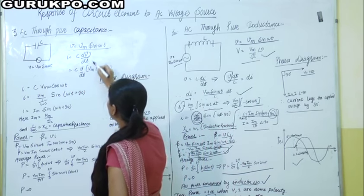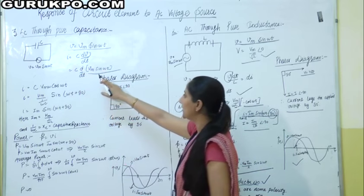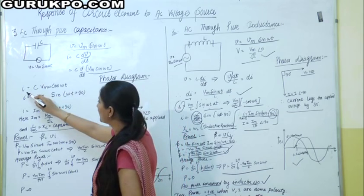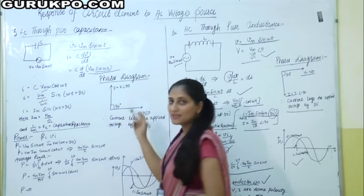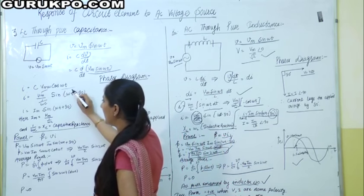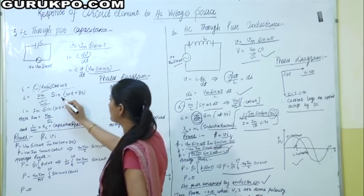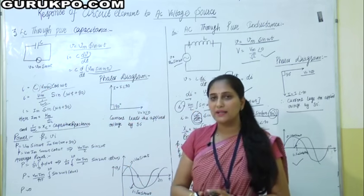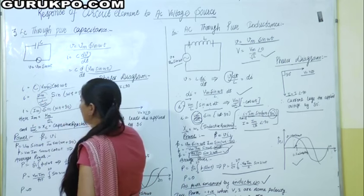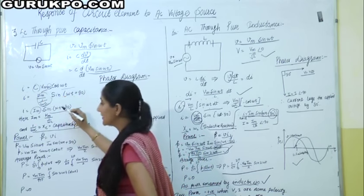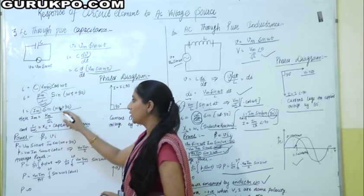We write V = Vm sin(ωt), so the equation becomes I = C × d/dt [Vm sin(ωt)]. Differentiating, with Vm constant, the differentiation of sin(ωt) becomes ω cos(ωt). So I = C × Vm × ω cos(ωt). We can write cos(ωt) = sin(ωt + 90°). The current becomes I = (Vm / (1/ωC)) × sin(ωt + 90°). The value Vm / (1/ωC) equals Im, our peak value of current. So I = Im sin(ωt + 90°).